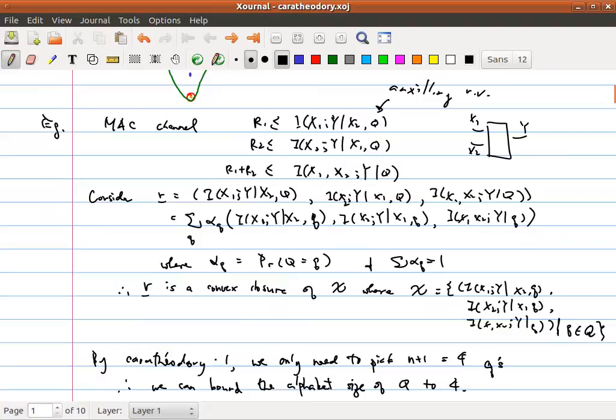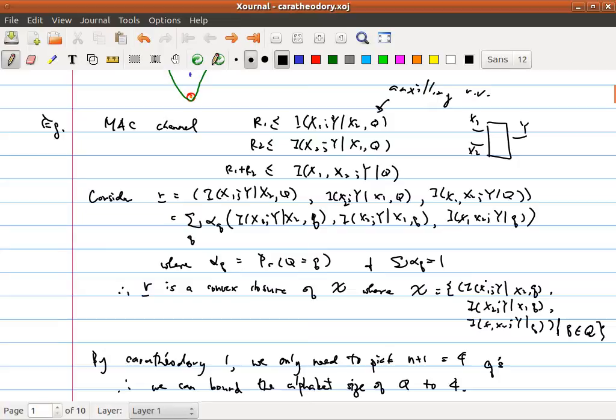Now by the Carathéodory theorem part 1, we know that as long as the dimension, in this case the dimension is 3, we only need n plus 1 points in x such that any point R can be represented as a convex combination of these n plus 1 points. Therefore, we can limit the alphabet size of Q to only 4. So we can only pick 4 points and that will be sufficient to represent all the possible R.